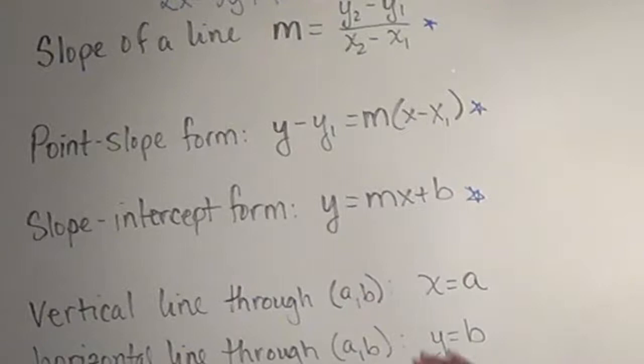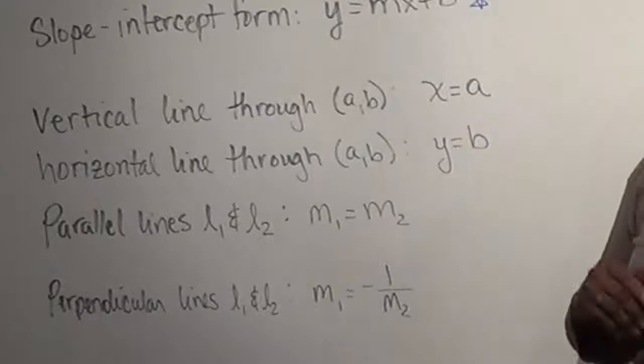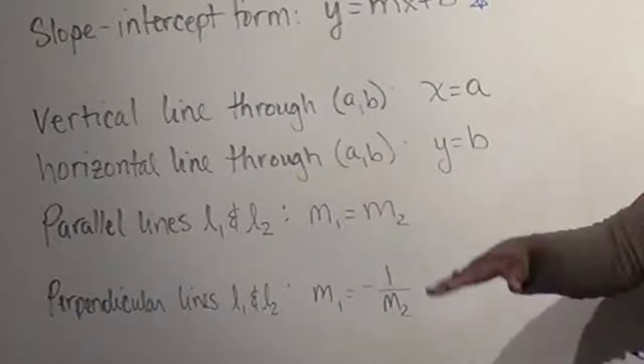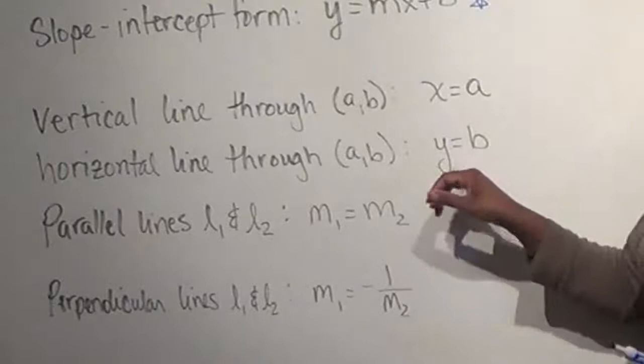If I have a horizontal line, the difference is that my y values are going to be the same. So when I look at my slope, the y's cancel out, and I'm looking at zero over some number — a slope of zero. Because there's no rise to it, just the run, the equation is going to be whatever that b coordinate is, so y equals b is my horizontal line.